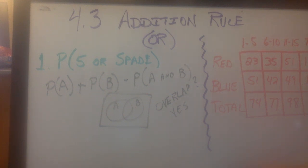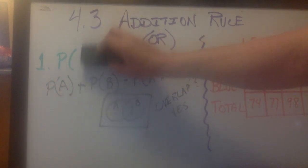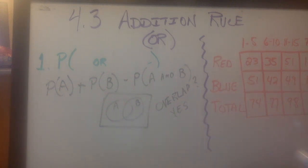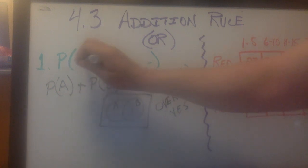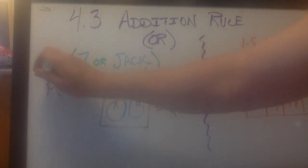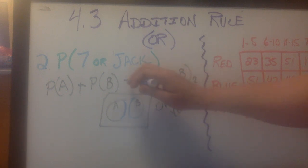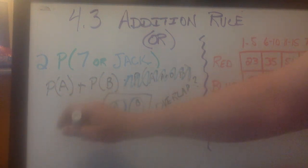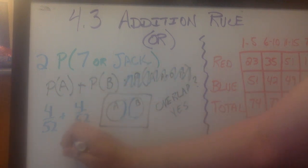Number two, example two says, find the probability that you get a seven or a jack. The question is, do the sevens and the jacks overlap? And the answer is no. Their Venn diagram looks like that. Sevens and jacks do not overlap. So what's the difference in this formula? This goes away. You don't have to worry about it. The probability of a seven is four out of 52, and the probability of a jack is four out of 52. So your answer is simply eight out of 52.